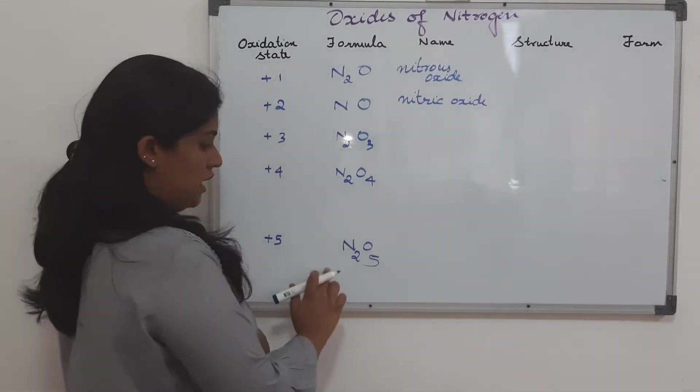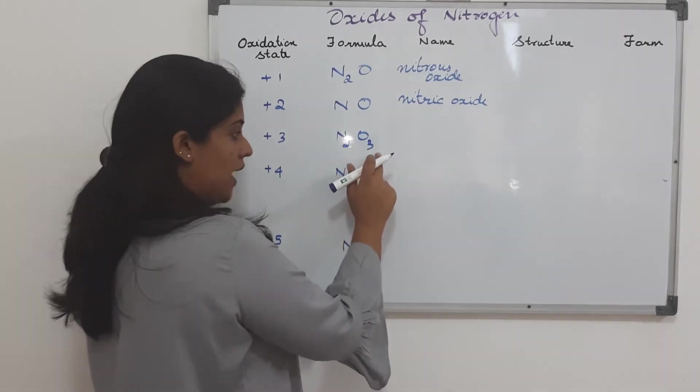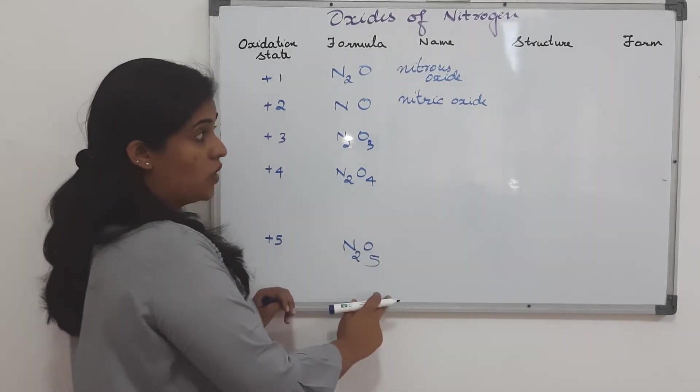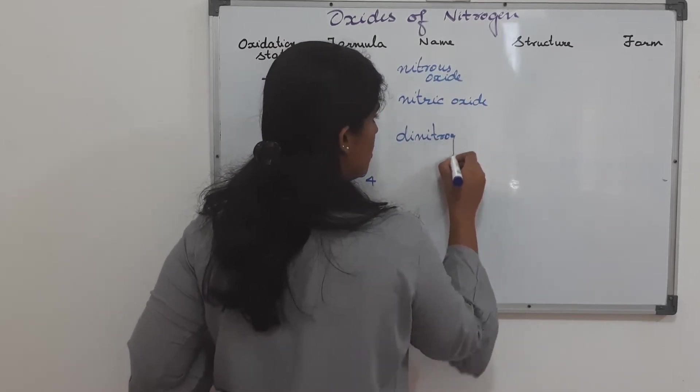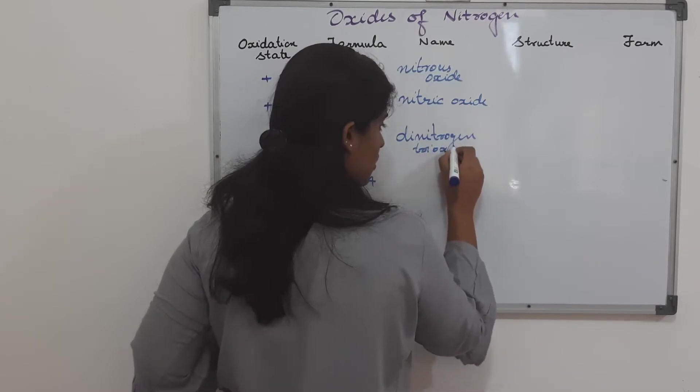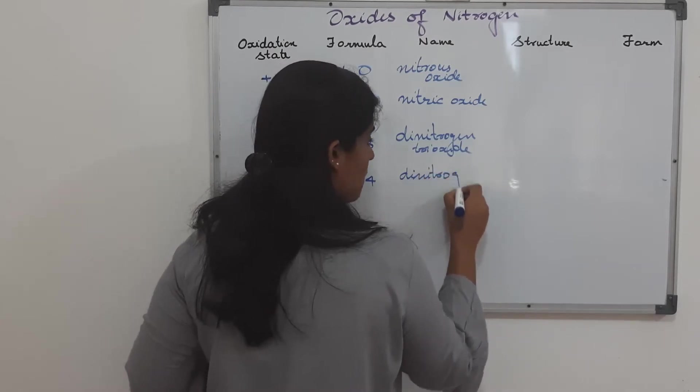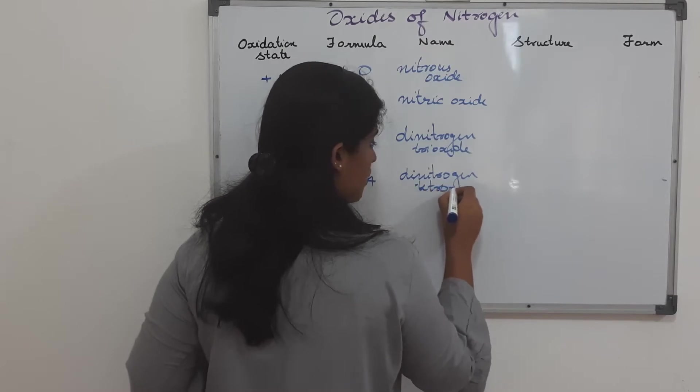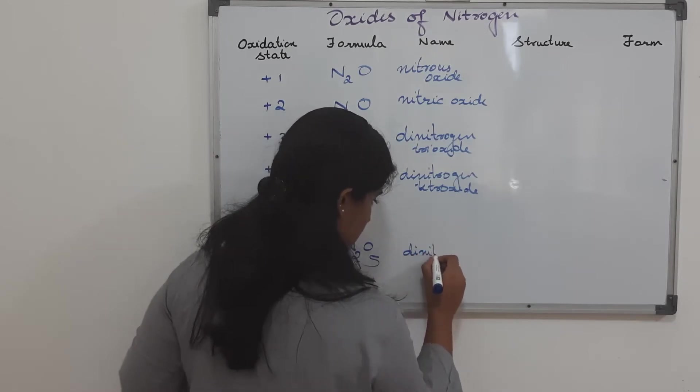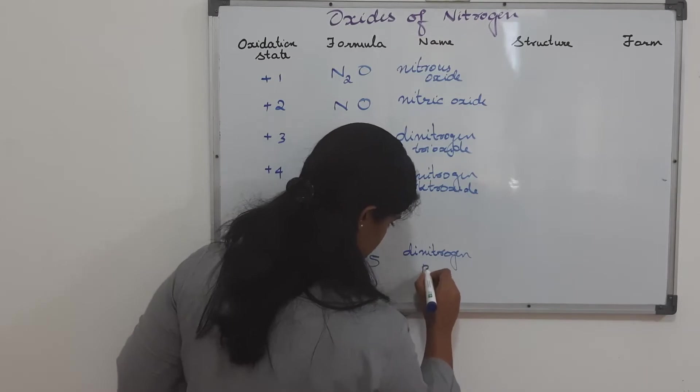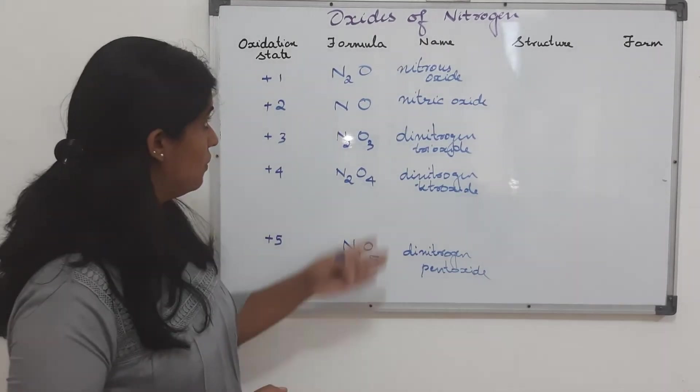Then, these three, we name it depending on the number that is here. It is dinitrogen trioxide, dinitrogen tetroxide, dinitrogen pentoxide. Very easily, we wrote their name also.